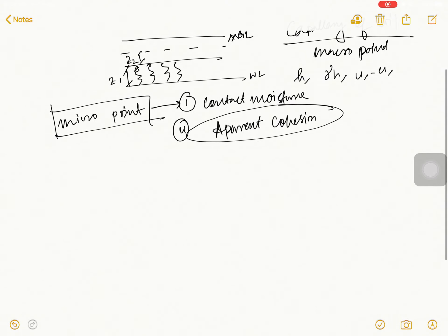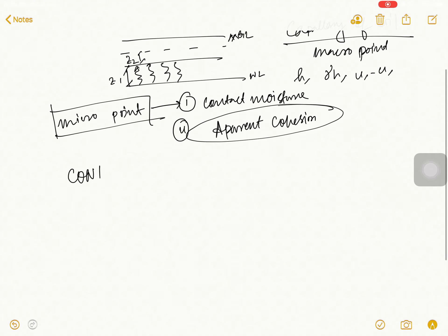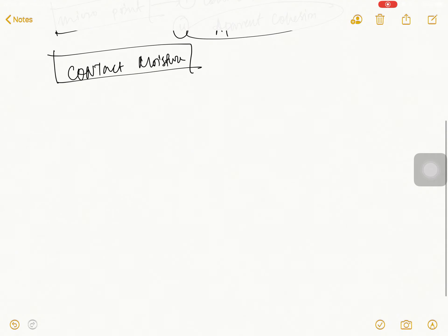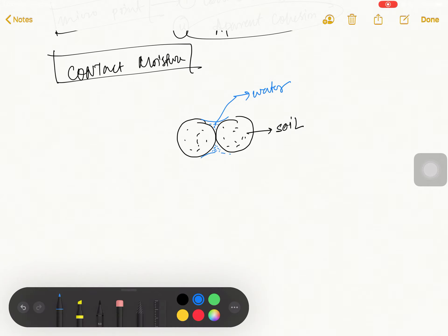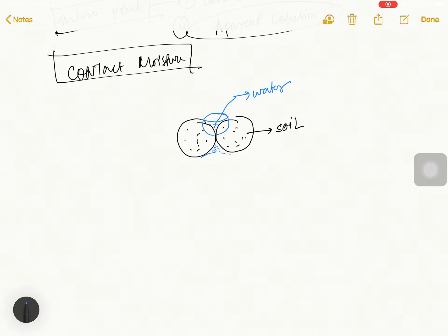So first, let's talk about contact moisture. Understand, this is one soil particle, this is another soil particle, and this is your water. Whatever ball is this? Water is water. This is soil particle. This water contact with adjacent these two soil particles.